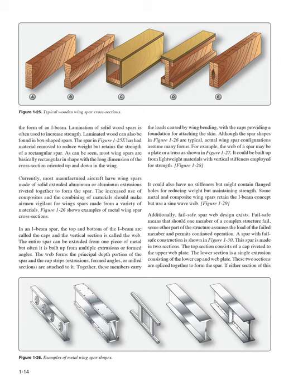Lamination of solid wood spars is often used to increase strength. Laminated wood can also be found in box-shaped spars. Most wing spars are basically rectangular in shape with the long dimension of the cross-section oriented up and down in the wing. Currently, most manufactured aircraft have wing spars made of solid extruded aluminum or aluminum extrusions riveted together to form the spar. In an I-beam spar, the top and bottom are called the caps and the vertical section is called the web. The entire spar can be extruded from one piece of metal but often it is built up from multiple extrusions or formed angles. The web forms the principal depth portion of the spar, and the cap strips, extrusions, formed angles, or milled sections are attached to it. Together, these members carry the loads caused by wing bending, with the caps providing a foundation for attaching the skin.